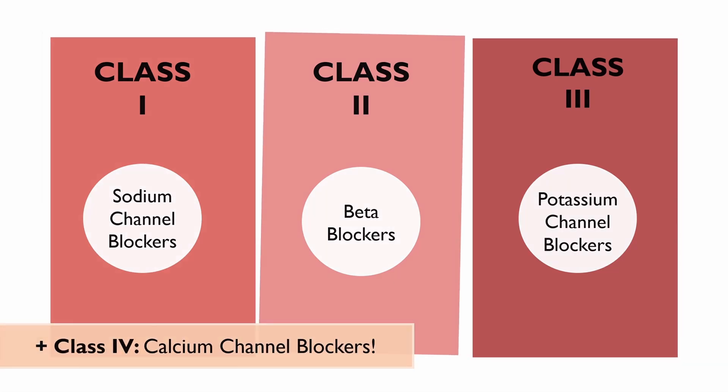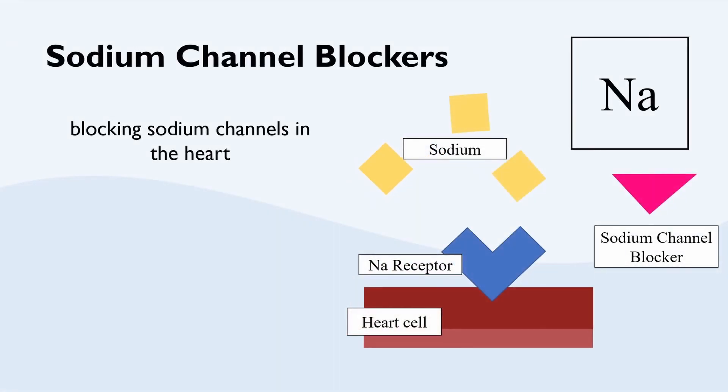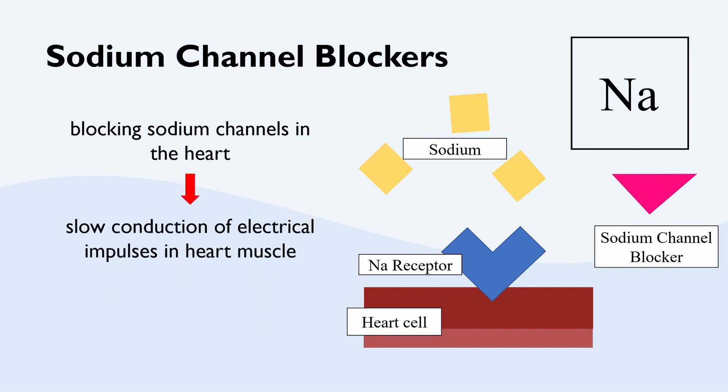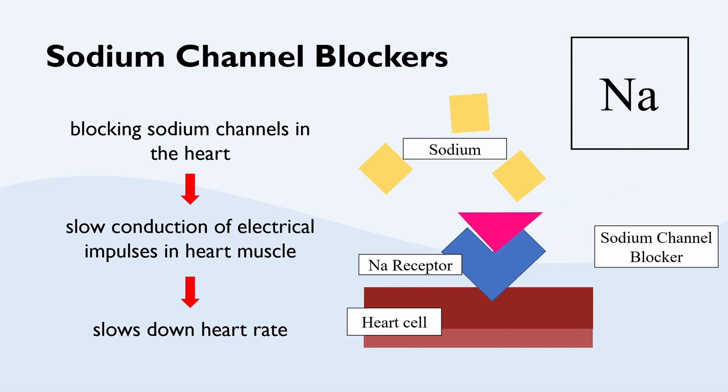Sodium channel blockers slow the conduction of electrical impulses in the muscle of the heart. Slower conduction means that heart muscles contract less frequently, thereby slowing down heart rate. They do this by blocking sodium channels in the heart, thereby slowing the conduction of electrical impulses and heart rate.